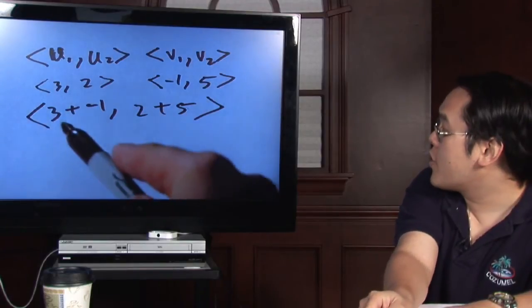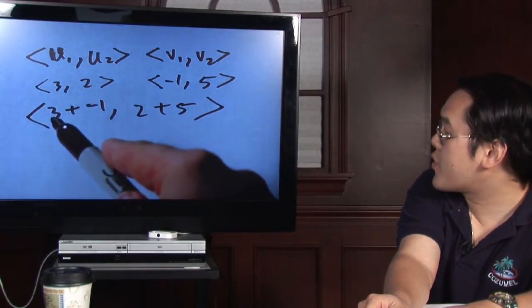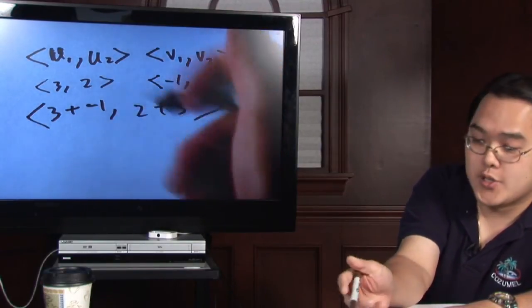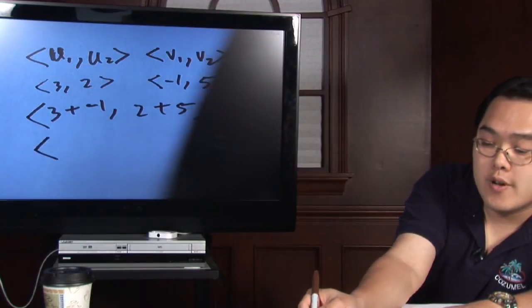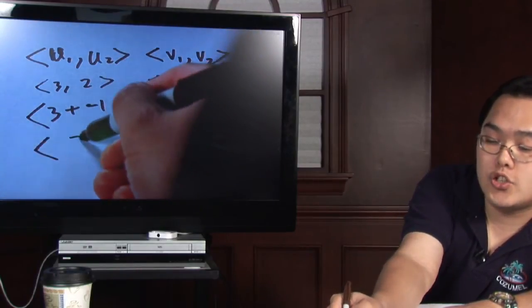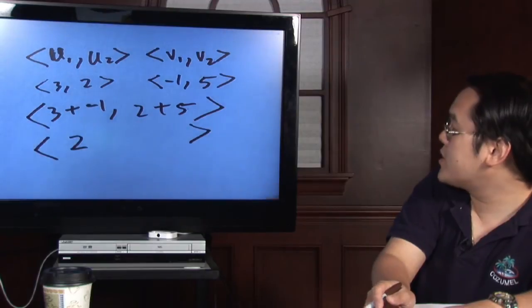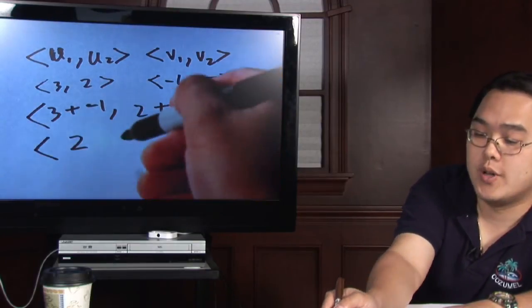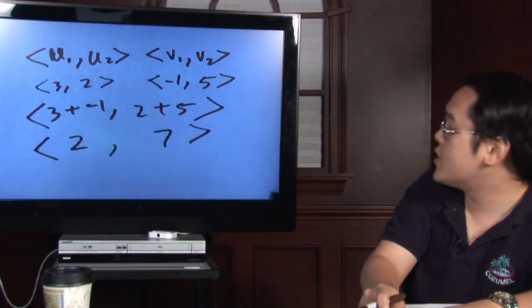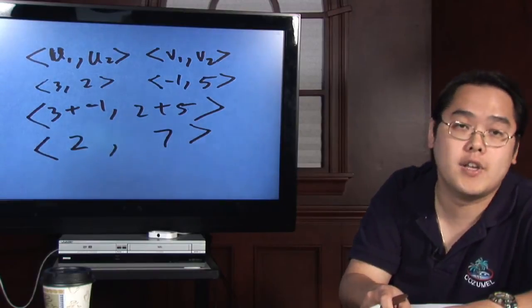Now 3 plus -1, that's like saying 3 minus 1, and so the new first component will be 2. And basically 2 plus 5, as you know, is going to give you 7. So that will be the second component of the added vectors.